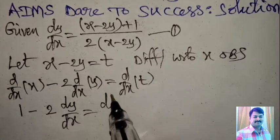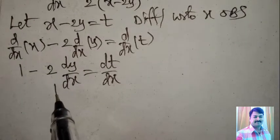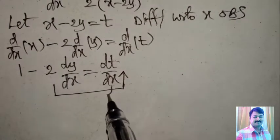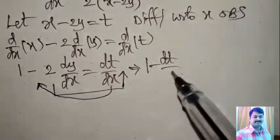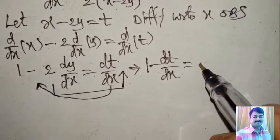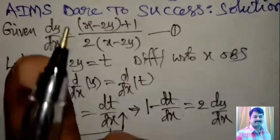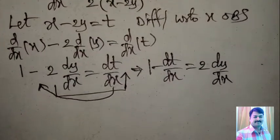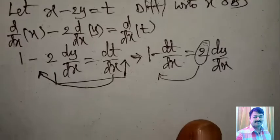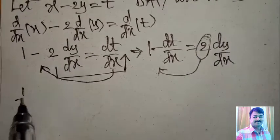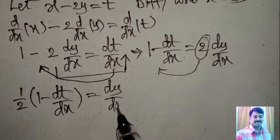Rearranging: 1 minus dt/dx equals 2 times dy/dx. The extra factor of 2 moves to the left side by division, giving (1/2)(1 minus dt/dx) equals dy/dx. According to our given value, dy/dx equals (x minus 2y plus 1) divided by 2(x minus 2y). Since x minus 2y equals t, and dy/dx equals (1/2)(1 minus dt/dx), substituting: (1/2)(1 minus dt/dx) equals (t plus 1) divided by 2t.